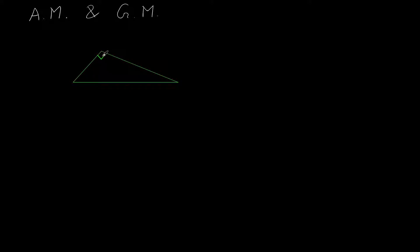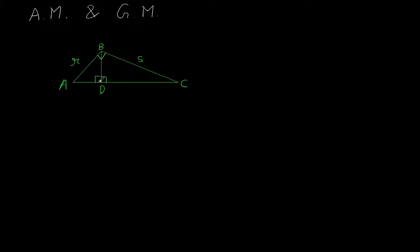Let's say we have a right angle triangle — it forms 90 degrees — and the sides are R and S. We draw a straight line perpendicular to the hypotenuse from the 90 degree vertex. We label the vertices A, B, C. From the 90 degree point we draw a perpendicular to the hypotenuse, dividing it into two segments: let's call them A and B, and the length of this perpendicular H.